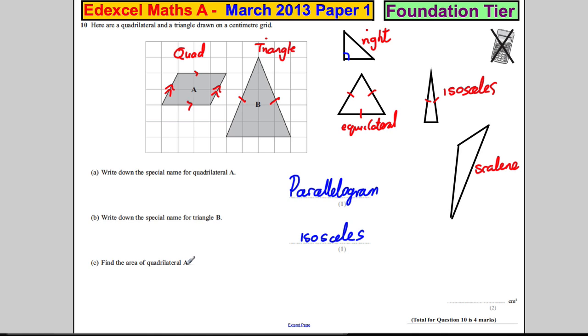Find the area of quadrilateral A. There are a couple of ways to do it. Either you know the formula for area of a parallelogram, which is base times height—that's base times perpendicular height, by the way. That would be three across multiplied by two up, which is 3 × 2 = 6 centimeters squared.